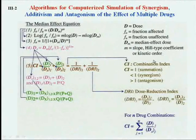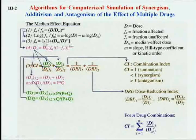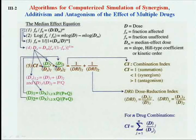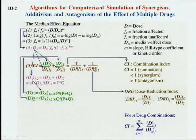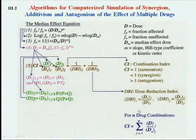This is the algorithm for computer simulation — how all that report is generated. The median effect equation is rearranged so that you can calculate effect, and from effect you can calculate dose. The combination index equation is derived by Jou and Talalay, and this is the Dose Reduction Index, obtained by substitution. This can be not only for two drugs — it can be for N drugs.